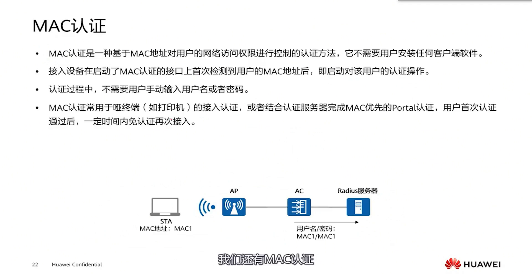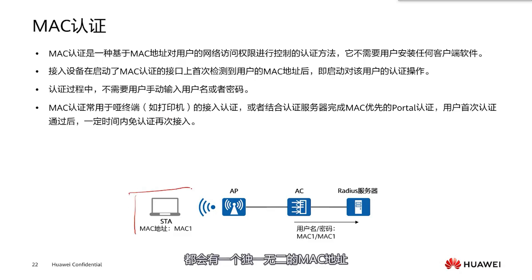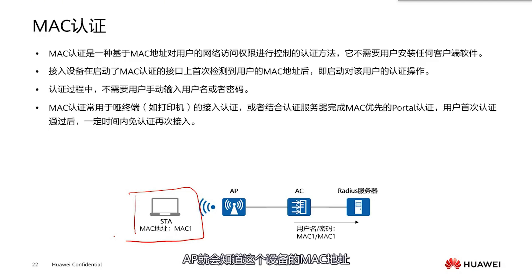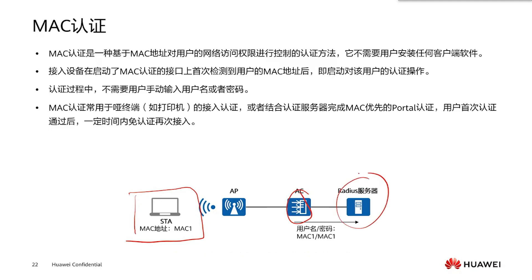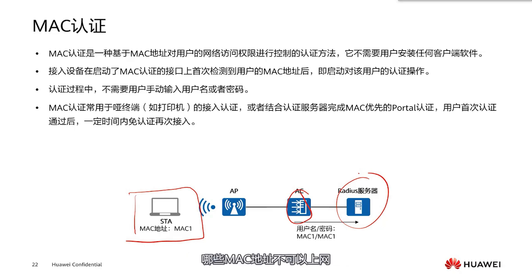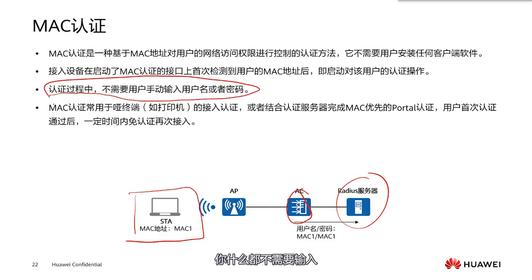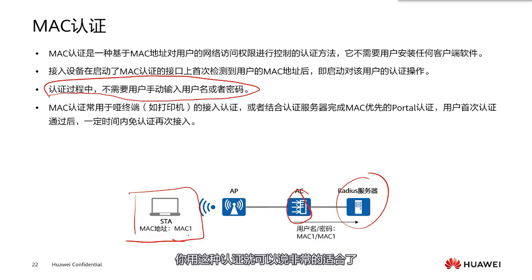Besides 802.1x, we also have MAC authentication, which is relatively easy to understand. Each device has a unique MAC address. When a device connects to an AP, the AP will detect this device's MAC address. Our AC will then use this MAC address to consult the server, asking whether this person can access the internet. In the AC, we need to pre-configure which MAC addresses can access the internet and which cannot. The biggest feature of this authentication is that you don't need to enter anything, because your MAC address is embedded in your device's network card. So for devices that are not user-interactive, this kind of authentication is very suitable.